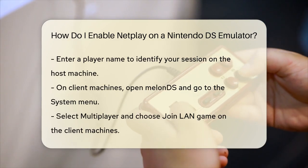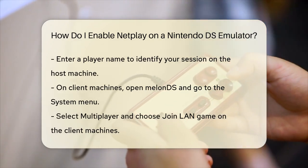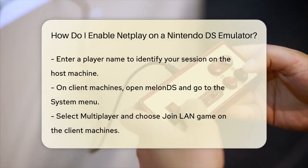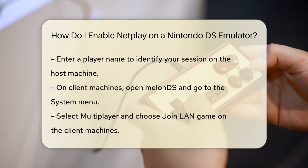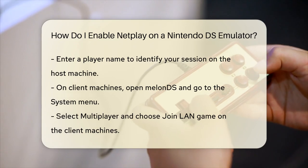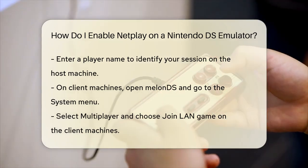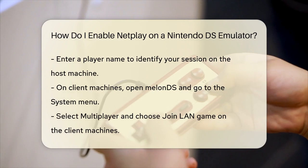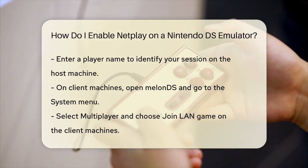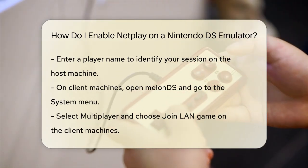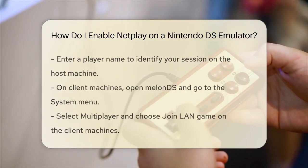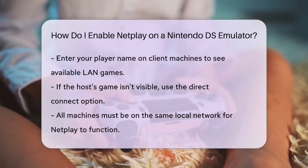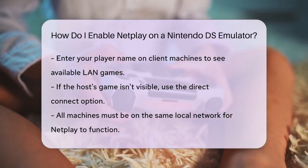On the client machines, follow a similar process. Open MelonDS, go to the System menu, select Multiplayer, and then choose Join LAN Game. Enter your player name, and the system will list any existing LAN games. If you don't see the host's game, you can use the Direct Connect option.